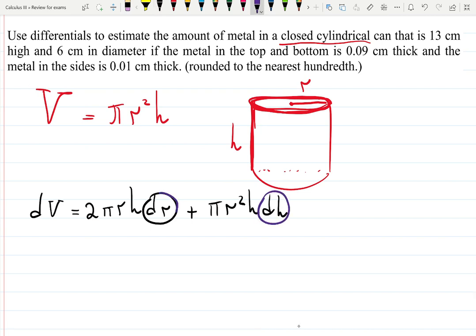So these are partial derivatives. These are given: dr is 0.01, and dh is 0.18.